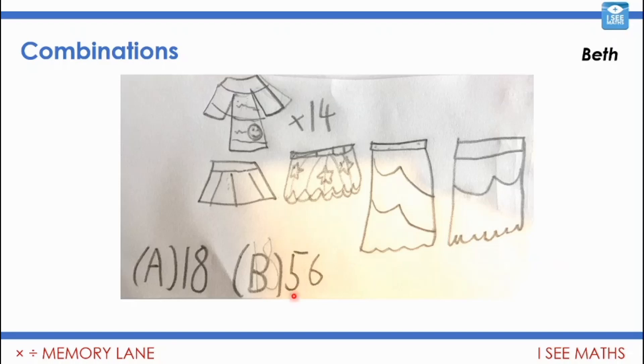The right answer was 56, because each of the 14 tops you could wear with this skirt, or each of the 14 tops can be worn with this one, or this one, or this one. So in total I need to do 4 multiplied by 14. The mistake is just adding up all the pieces of clothing.